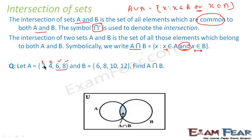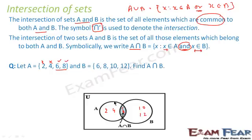To draw this using a Venn diagram, we first find the common elements — 6 and 8 — and place them in the overlapping region, then write the other elements: 2 and 4 on the A side, and 10 and 12 on the B side. The blue area is A intersection B — the common elements part of both A and B. When you say A union B you get the whole bigger set; when you say A intersection B you get the smaller common set.